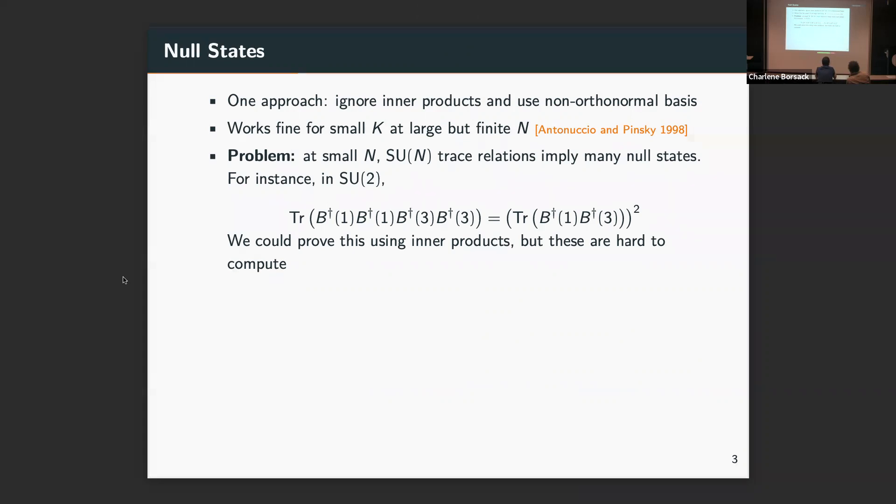For instance, the two states I had on the previous slide, very non-obviously, are actually the same in SU(2), not for higher N, but for SU(2). This single-trace state and this multi-trace state are identical. We could prove it by taking its norm, showing that it's zero, but again that's hard to compute. At higher K that's just not going to work.